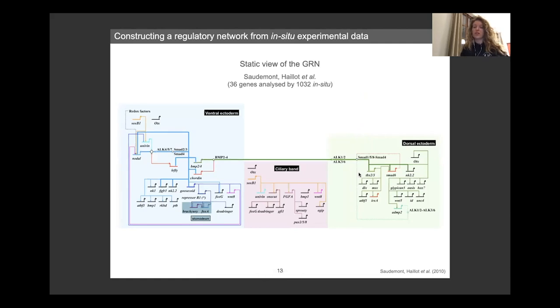So doing so, in 2010, there have been already a first gene regulatory network that have been made by the team of Thierry Lepage, consisting of 36 genes analyzed based on more than a thousand in-situ experiments. And you can already see it already includes some specific markers of each of the three territories.